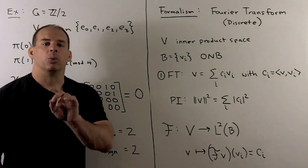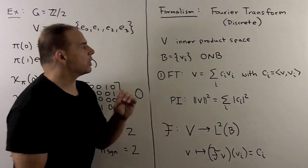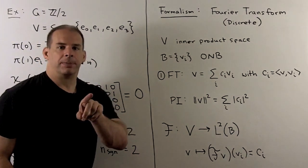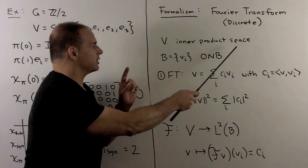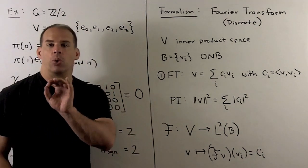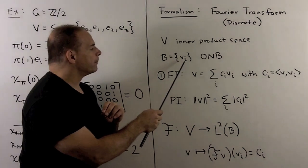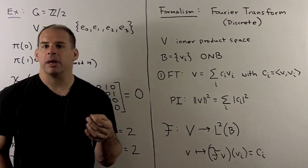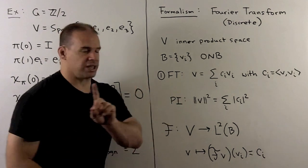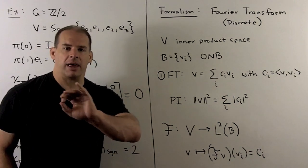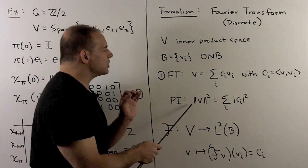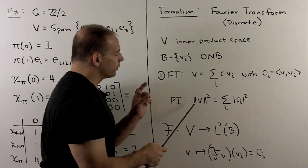Shifting gears, we consider the formalism of discrete Fourier transforms. For the overriding philosophy, let V be any finite-dimensional inner product space, with no group actions. Because we have an inner product space, we can choose an orthonormal basis B given by vectors v_i. Then we have Fourier's trick: we can expand any vector of V in terms of that basis with a formula giving the coefficient for each basis vector. Parseval's identity says once you have these coefficients, you have a rule for the length squared of any vector.